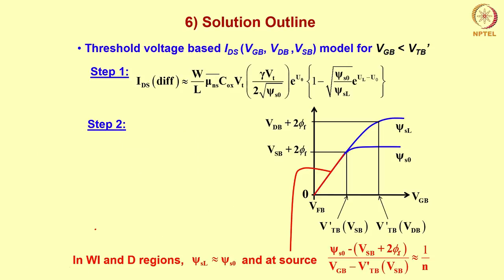Now we are interested in the depletion and weak inversion regime for Vgb < V'Tb. In this region, ψsL and ψs0 are almost the same and the ψs vs. Vgb behavior is approximately a straight line. Therefore we approximate this behavior by a linear equation. In weak inversion and depletion, ψsL ≈ ψs0, and at the source we write: (ψs0 − Vsb − 2φf) / (Vgb − V'Tb(Vsb)) ≈ 1/n, where 1/n is the slope of this straight line.